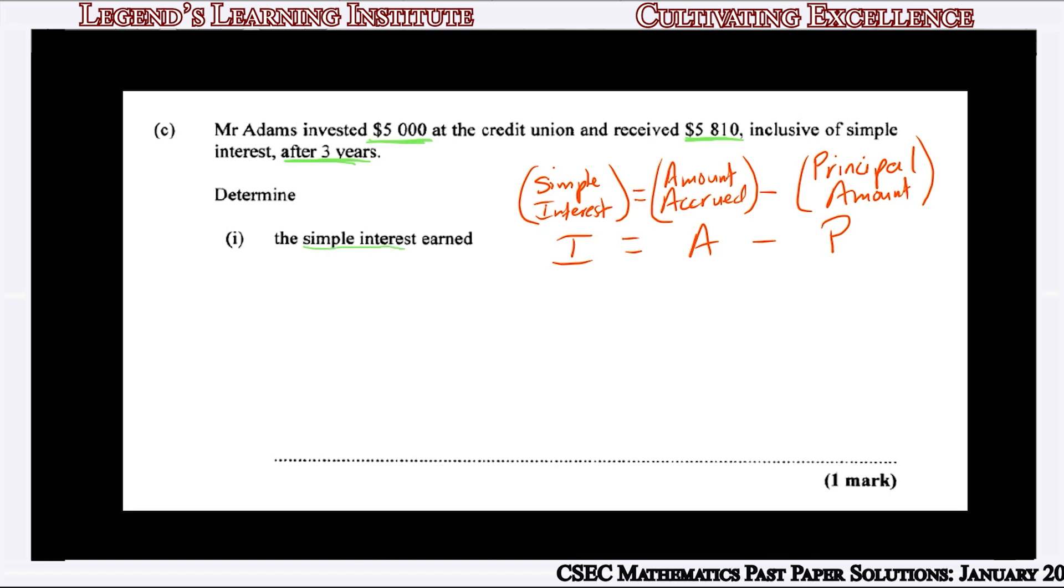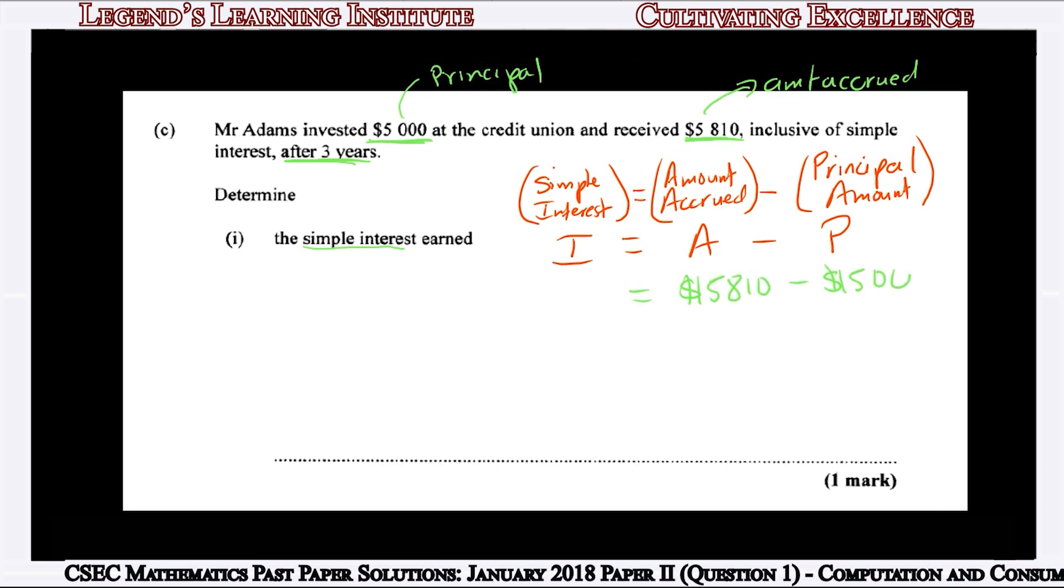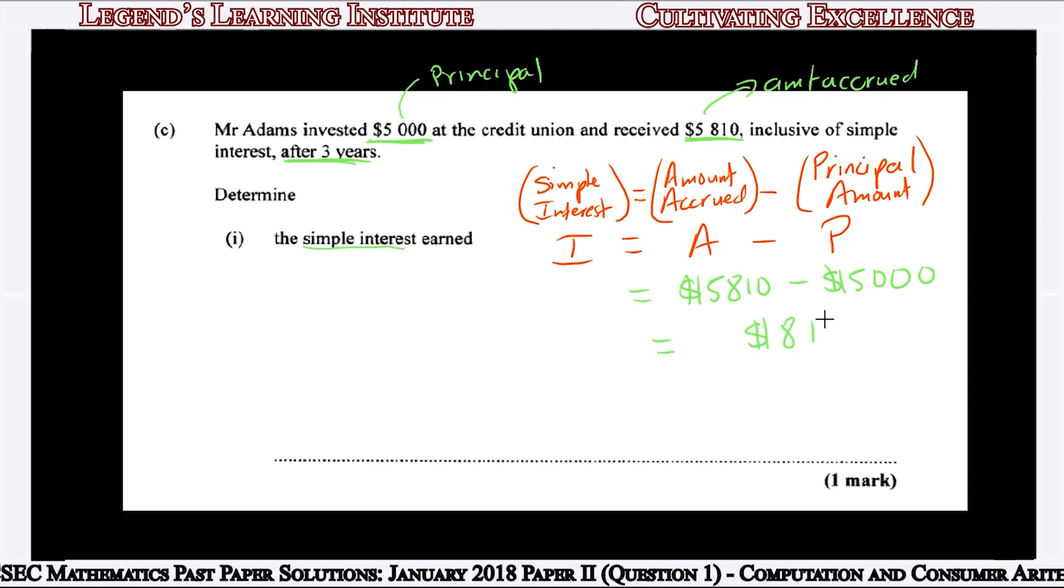Simple interest equals the amount accrued, which is $5,810, subtract the principal amount. The principal is the amount invested, so that's $5,810 subtract $5,000. Therefore the simple interest for Mr. Adams is $810.